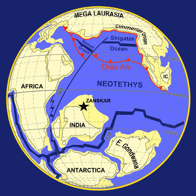Earth was initially molten due to extreme volcanism and frequent collisions with other bodies. Eventually, the outer layer of the planet cooled to form a solid crust when water began accumulating in the atmosphere. The Moon formed soon afterwards, possibly as a result of the impact of a planetoid with the Earth. Outgassing and volcanic activity produced the primordial atmosphere. Condensing water vapor, augmented by ice delivered from comets, produced the oceans.